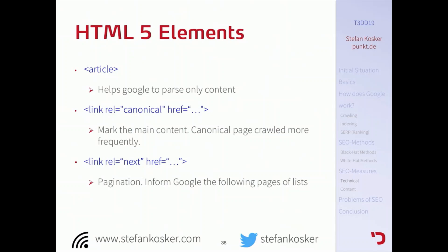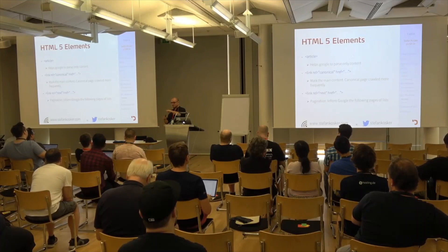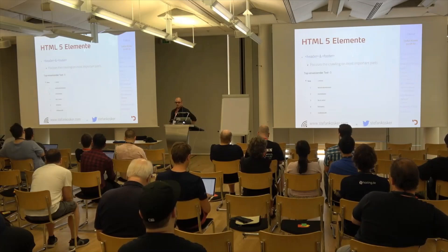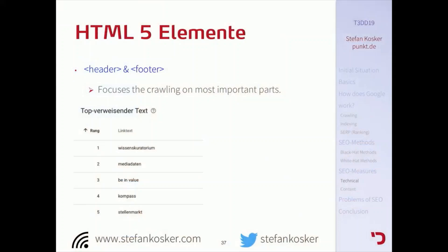Next and prev tags are used for paginations. If you have lists with paginations, people tend to use canonical — and this is actually the most common SEO mistake according to Google. If you have paginated lists, use next and prev so Google knows the list continues to the next pages. Usage of header and footer HTML elements helps Google focus on the most important parts. If you don't mark them, you get link value problems — in our case, Google thought that three random footer links were more important than our start page.